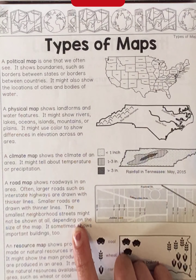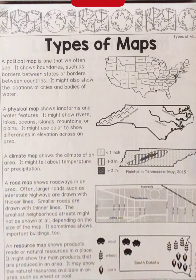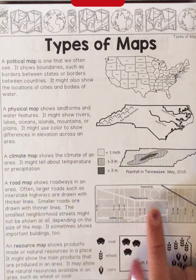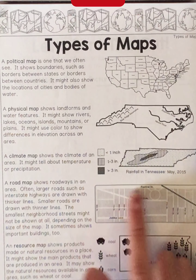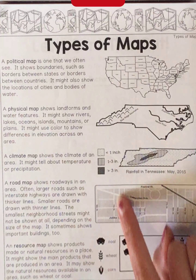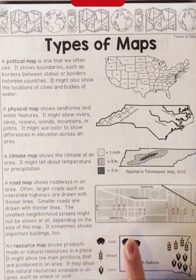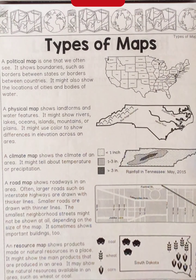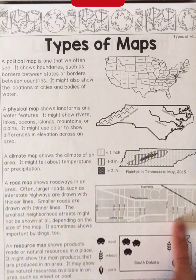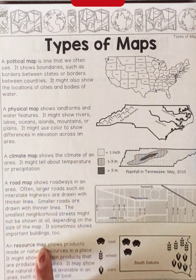A road map is like what you've seen when we used cardinal directions — this is actually a copy from the road map we saw in that lesson. You'll notice that streets vary in size: the bigger and thicker the line, the more it's a main street, versus smaller streets like 8th or 9th that are thinner. Highways and interstates are often much thicker or a different color, and sometimes road maps also show important businesses.